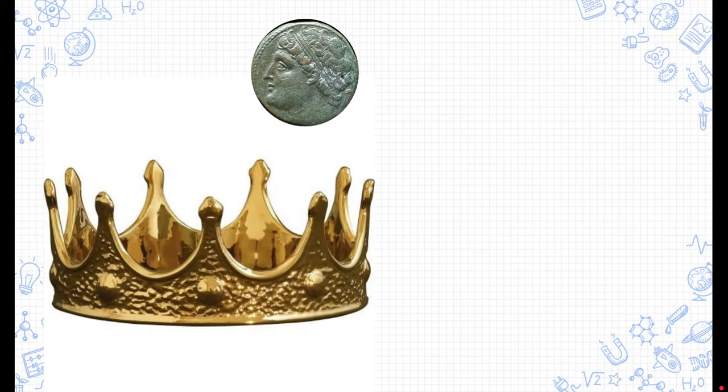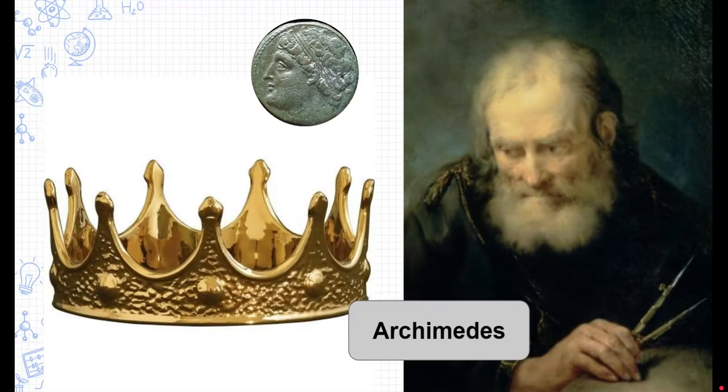The king didn't want to assume anything, so he called the smartest person he could think of, Archimedes, to come and figure out whether his crown was made of pure gold or not.